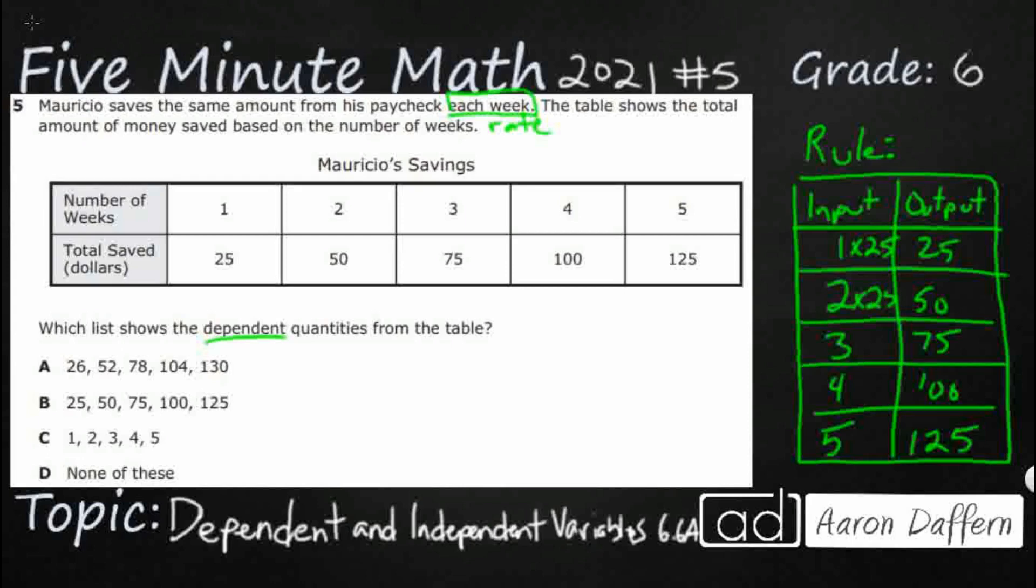So, think of quarters. Two quarters makes fifty cents. Three quarters makes seventy-five cents. Four quarters makes a dollar, hundred cents. Five quarters makes a buck twenty-five. So, here's our rule: times twenty-five.